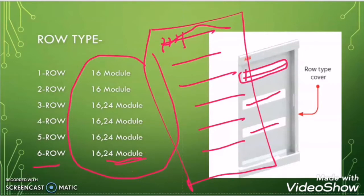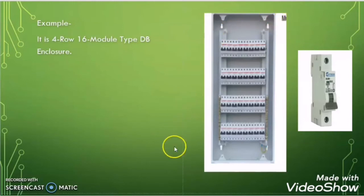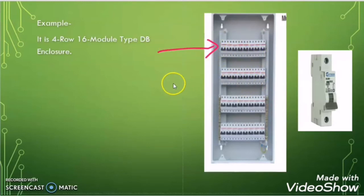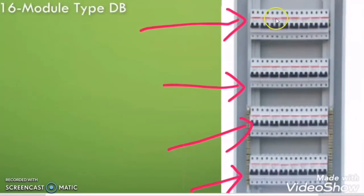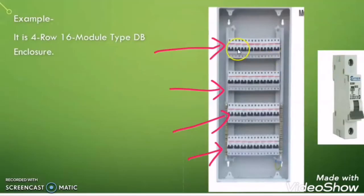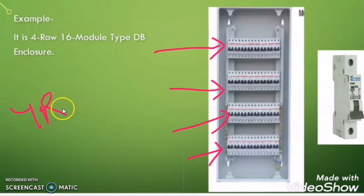Let us take an example. If anyone asks which type of FDB enclosure it is, you can say it is a four row enclosure because there are four rows. Then you have to count the breakers in each row — counting gives 16 modules per row. So this is a four row 16 module panel.